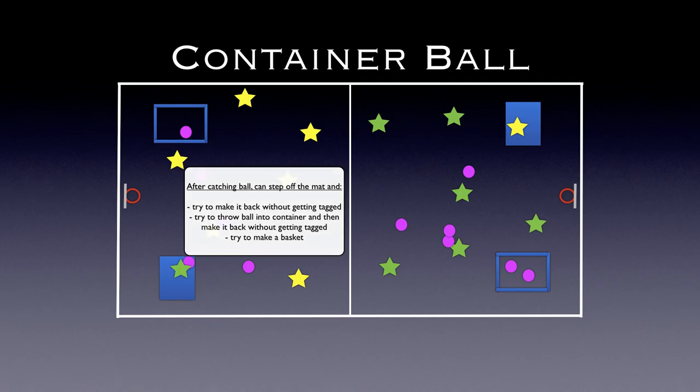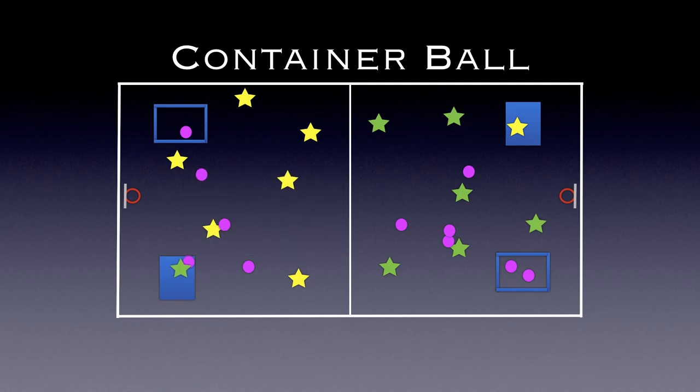This player's going to choose to try and make the basket. So the player's caught that ball and got out of the jail without getting tagged. He's released the ball, thrown it, and it has gone in. Now if that happens, then the green team will get to collect all those balls that were in the container that yellow threw in there, and they become the possession of the green team. So that's how that works.